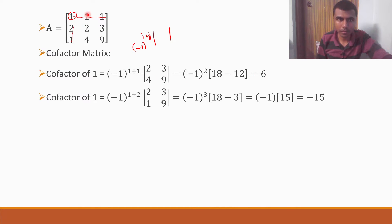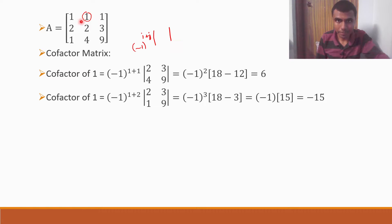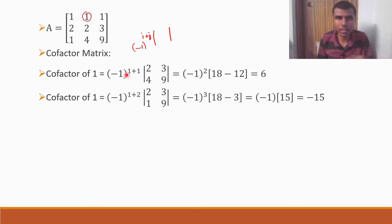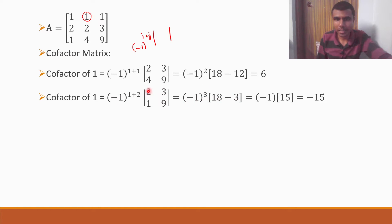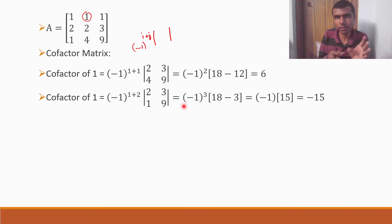For the element in row 1, column 2 (the second 1): cofactor = (−1)^(1+2) × det[2 3; 1 9] = (−1) × (18 − 3) = (−1) × 15 = −15. Since (−1) to an odd power gives −1, we get −15.